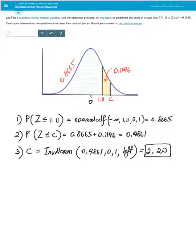To find this C value whose combined area to the left happens to be 0.9861 all I need to do is apply inverse norm of this area with 0 and 1 as my mu and standard deviation. Make sure to indicate its area to the left or don't indicate anything if you use older TI-84. It does the left tail automatically and that gives you 2.20 when rounded to two decimal places.